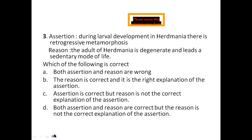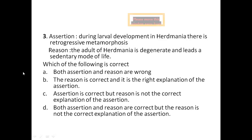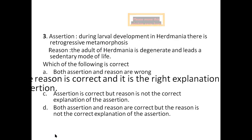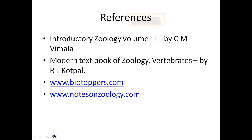Another type of question — assertion and reason: Assertion: during larval development in Herdmania, there is retrogressive metamorphosis. Reason: the adult Herdmania is degenerate and leads a sedentary mode of life. Is the reason correct and the right explanation of the assertion? Both assertion and reason are wrong — is that correct? No. The reason is correct and it is the right explanation of the assertion — that is the right answer. These are the references. Thank you for watching. Have a good day.